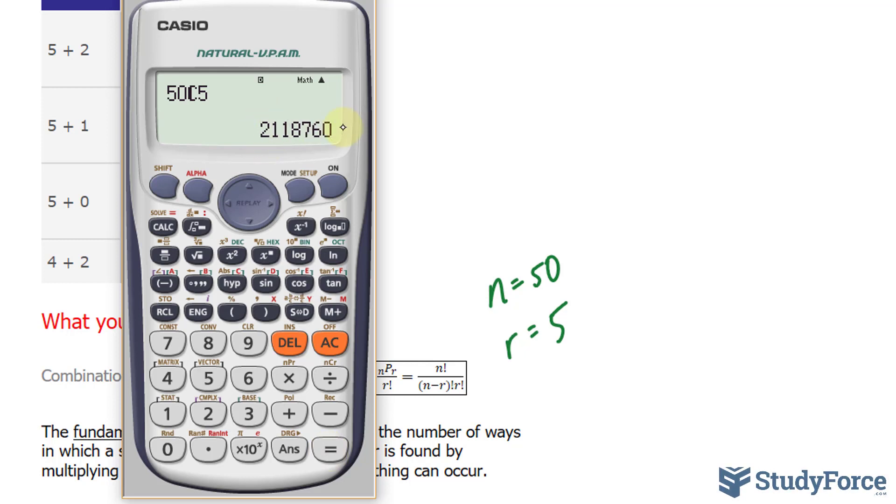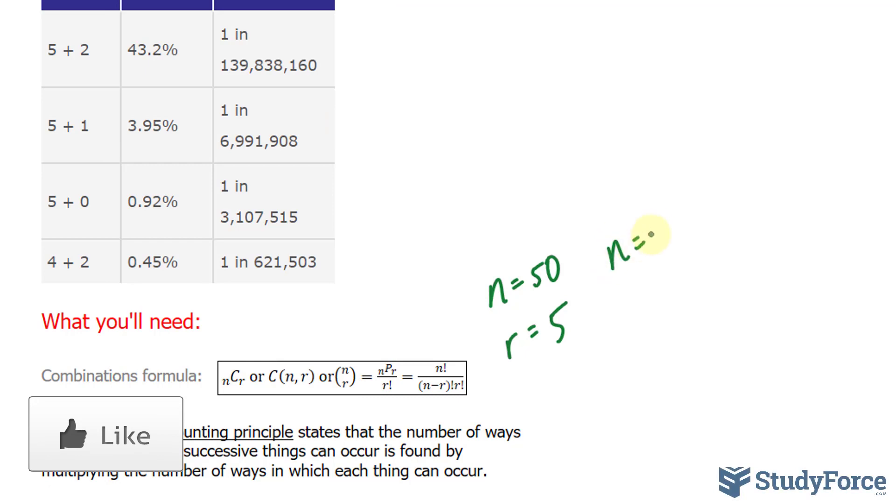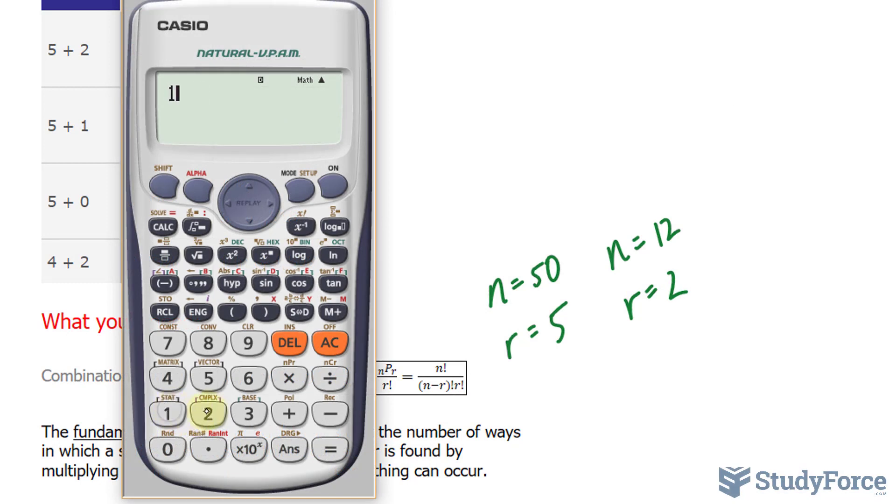Now what about the lucky numbers? In that pool, there is 1 through 12. So using the same formula, but this time our N value will be 12 and R will be 2. We type in 12 choose 2, and that's 66. So there are 66 ways you can select two numbers from 12.